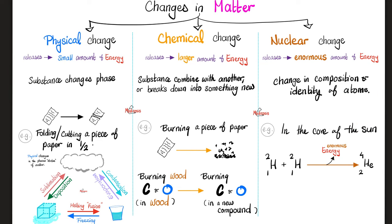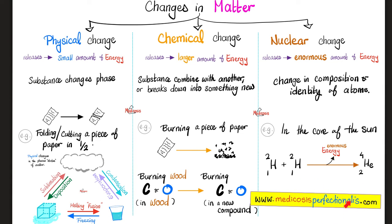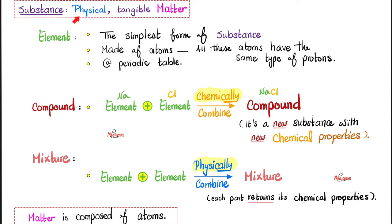For example, in the core of the sun, we have hydrogen, and hydrogen becomes helium, releasing an enormous amount of energy — which makes life on our lovely planet possible. By the way, you can download these notes in PDF form on my website, medicosisperfectionatis.com. So: a substance is physical, tangible matter. An element is the simplest form of substance, made of atoms — all of the same type. An oxygen molecule is made of two oxygen atoms.